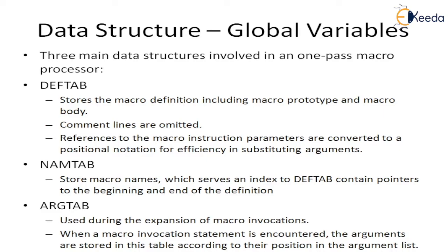The DEF table is nothing but the definition table, which stores the micro definition including the micro prototype and the micro block. It also contains different types of references to the micro instruction parameters, which are useful for converting to a positional notation table for efficiency in substituting arguments. The contents of the definition table are limited.